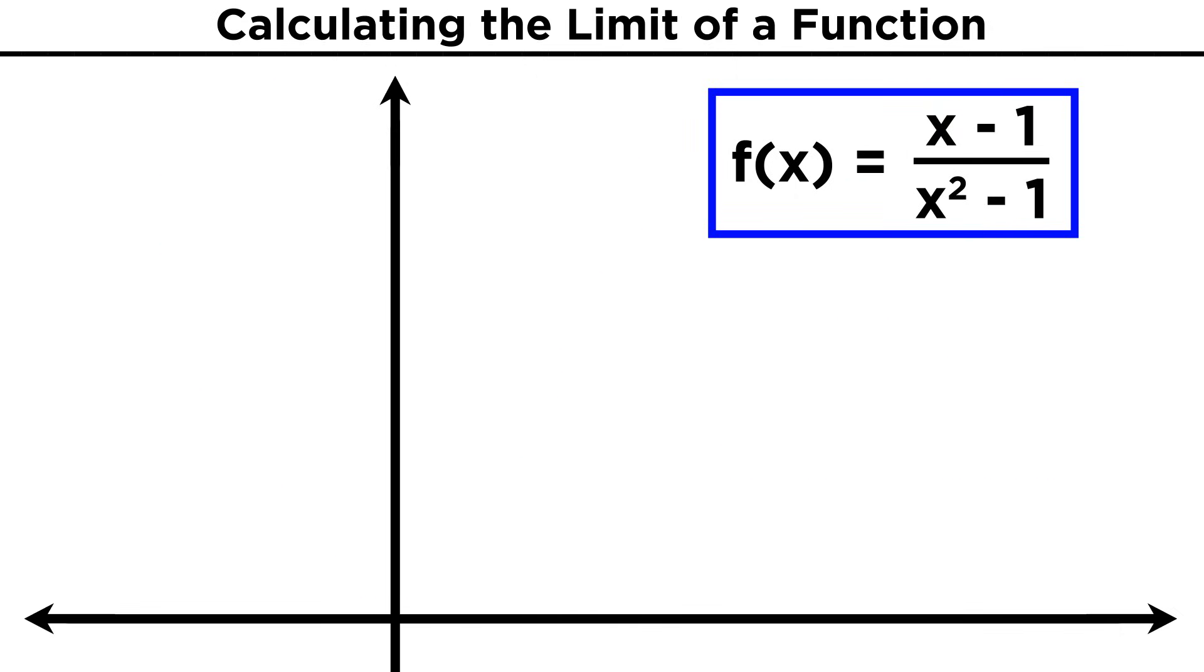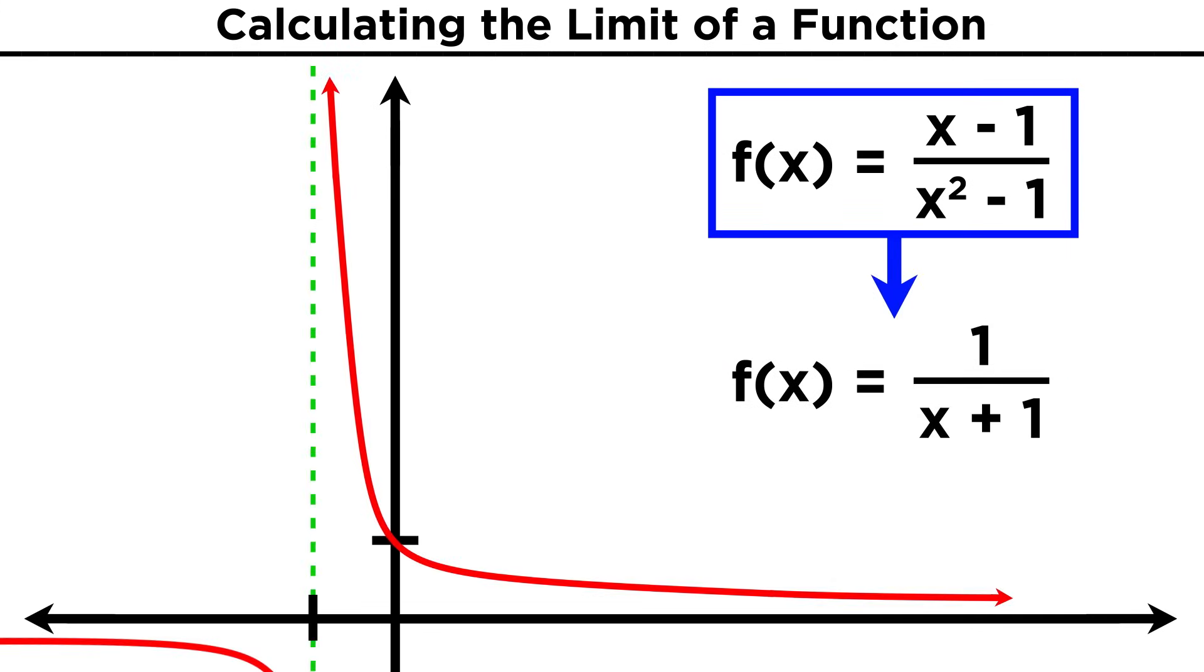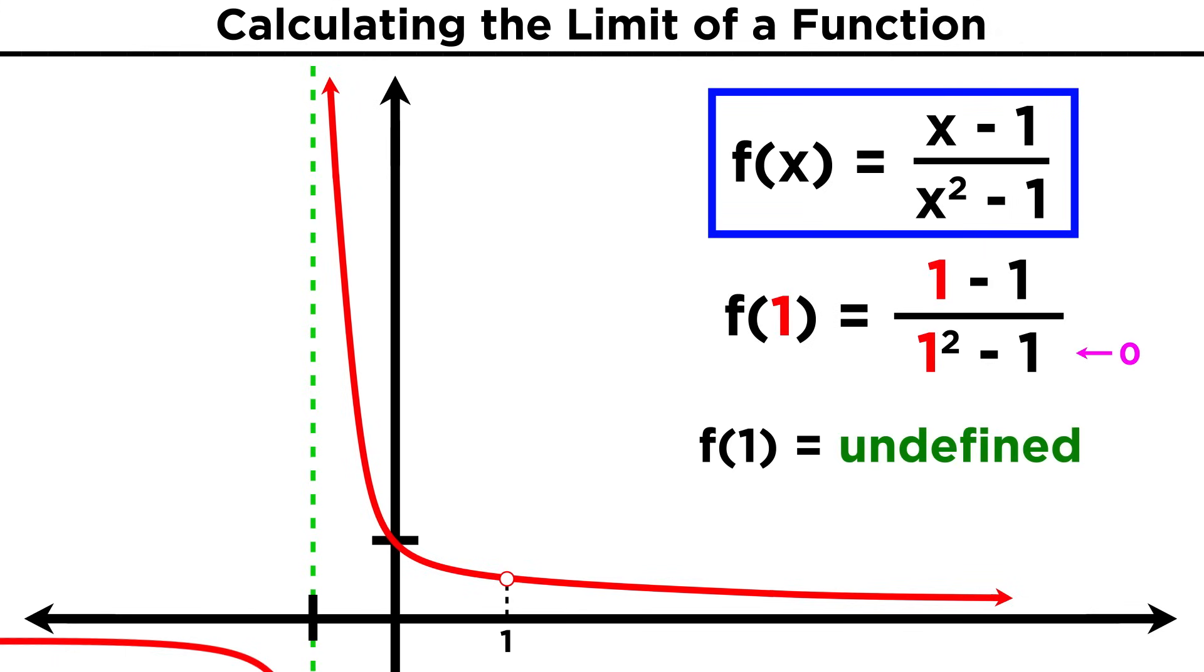Say we are now looking at the function x minus one over x squared minus one. As we may recall from algebra, this denominator can be factored, and then this x minus one term can cancel. So this function will look exactly like one over x plus one, which we can graph quite easily. But there is one difference. The original function must have a discontinuity at x equals one, because the denominator is zero when x equals one, which makes the function undefined.